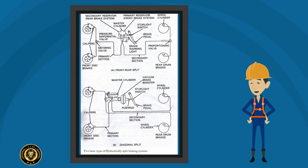the dual braking system is hydraulically separated or split in different ways. Most vehicles with rear wheel drive use the front rear split. Many front wheel drive vehicles use the diagonal split.